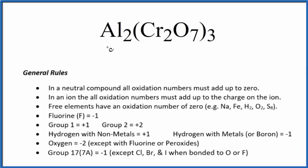In this video, we'll find the oxidation numbers for each element here in Al₂Cr₂O₇. This is aluminum dichromate.